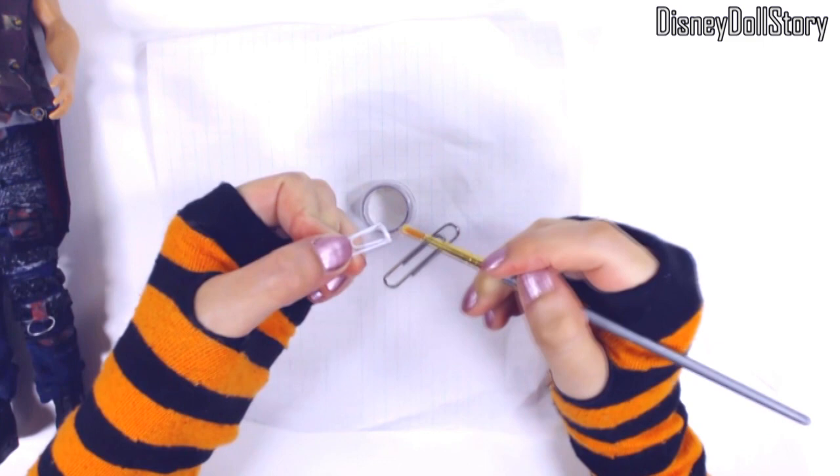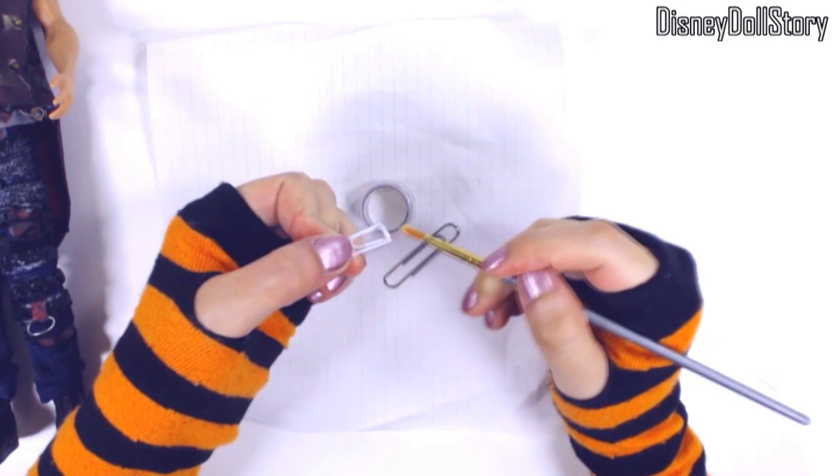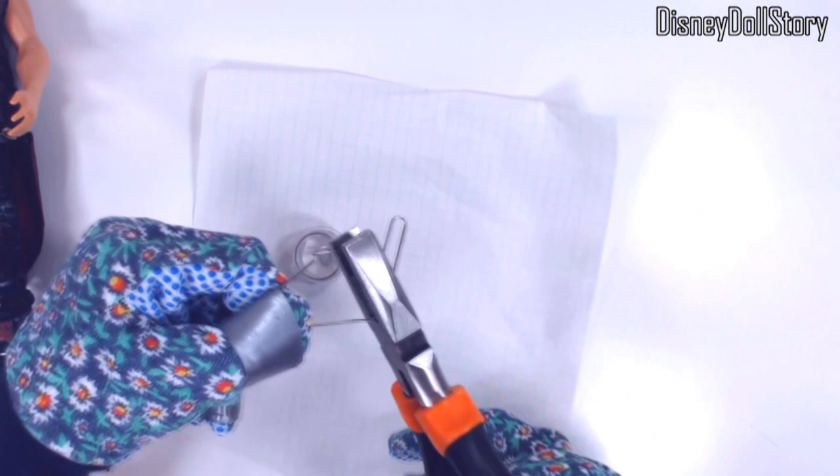I bent the tip and then glued to the hook. To make the hook of the hook, I used a longer paper clip. I bent it to form a hook.